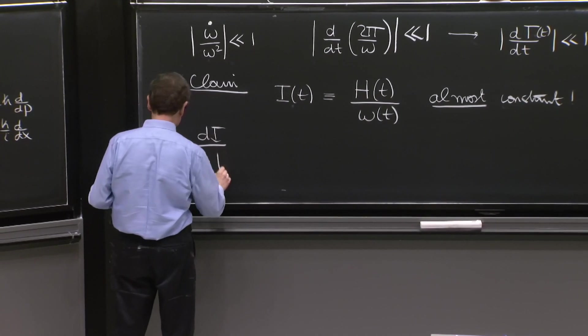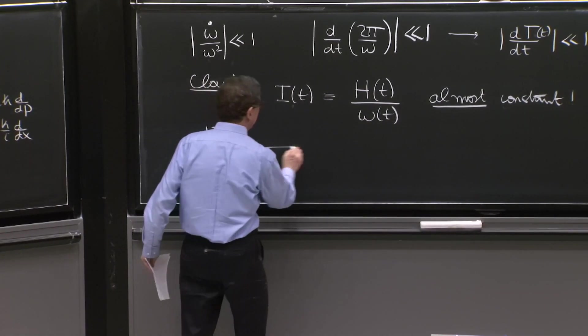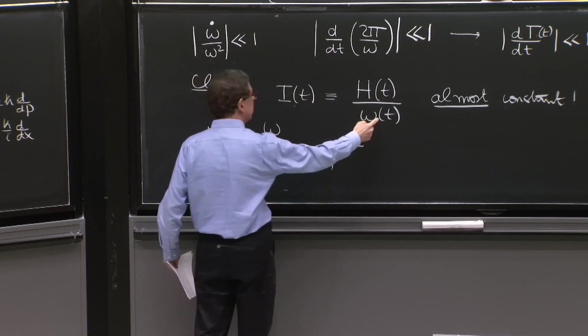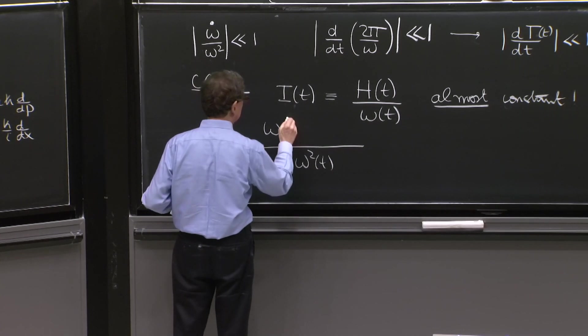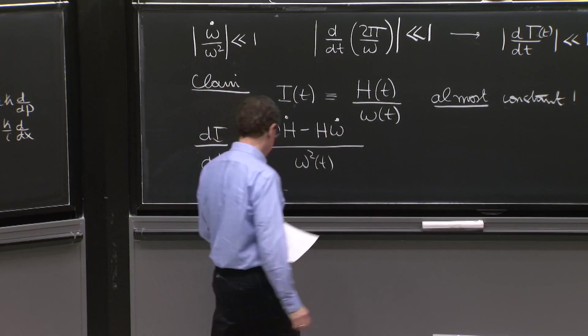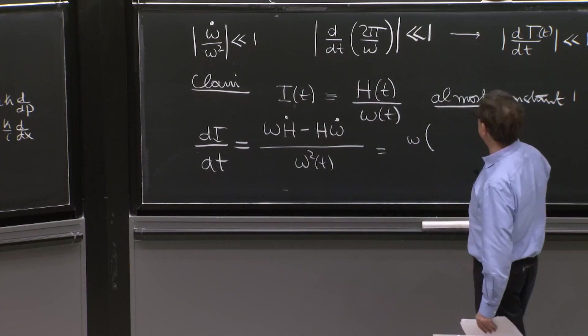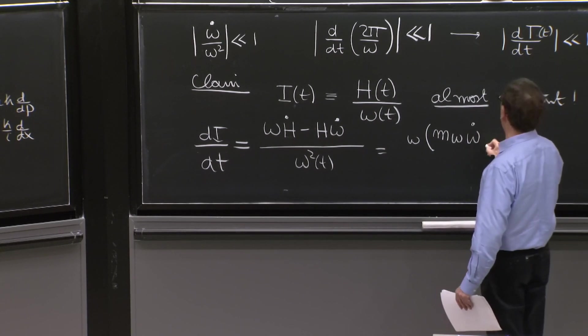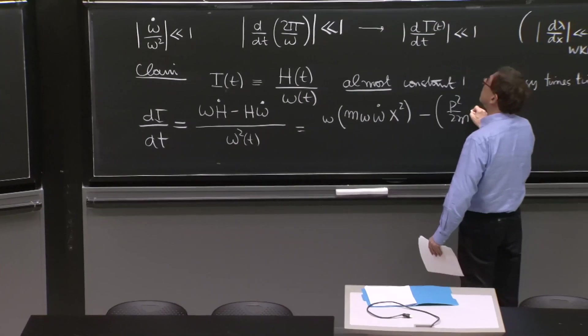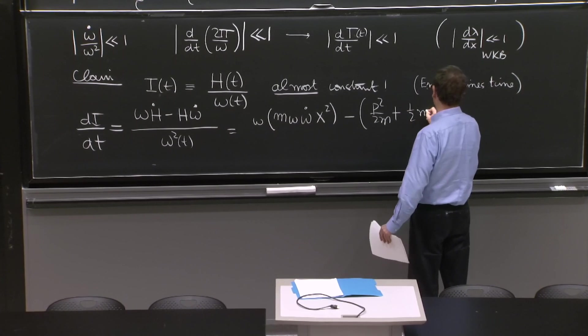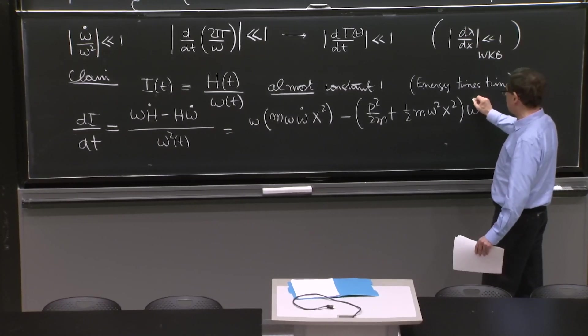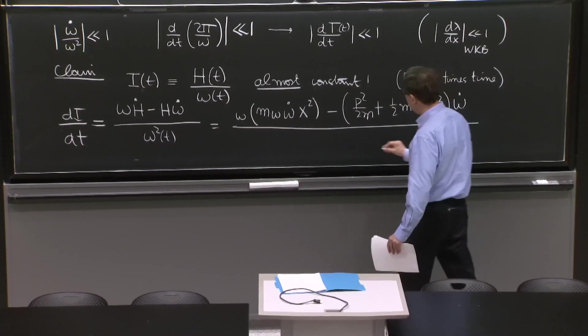Let's see. Let's compute the derivative dI/dt. So it's a ratio. So I have 1 over omega squared omega. I'm going to use dots and I'm going to stop writing the t dependence. Omega h dot minus h omega dot. So what do we have here? Where omega h dot was calculated up there.